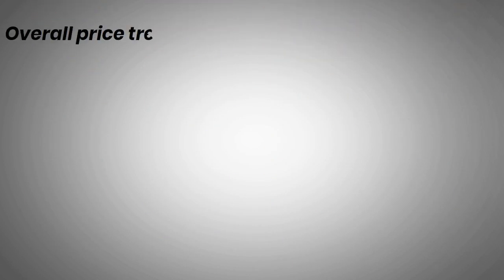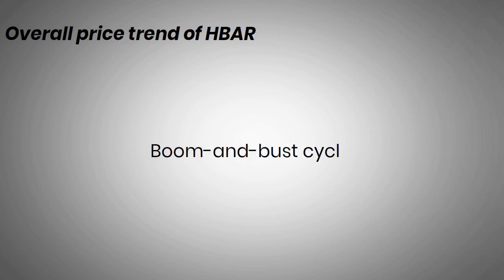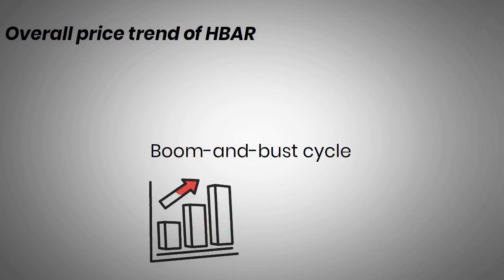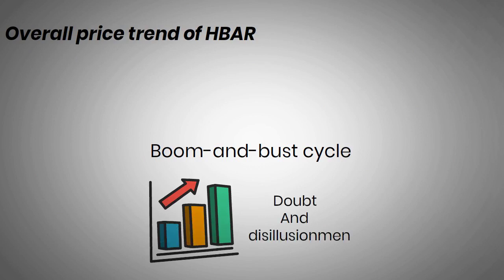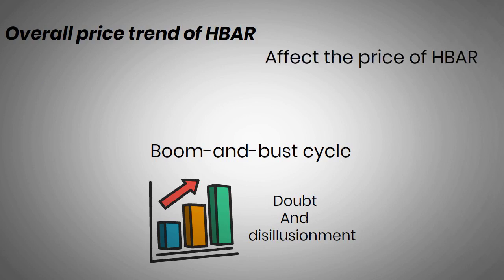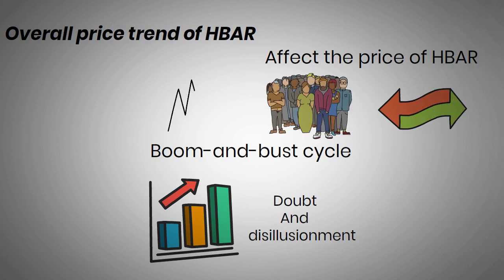HBAR's overall price trend tends to follow what's known as a boom-and-bust cycle — a pattern in which a period of growing excitement leads to a surge in price before doubt and disillusionment set in and result in a crash. Various things can affect the price of HBAR, including project news and developments, the flow of assets on exchanges, public sentiment, and emerging trends in the broader cryptocurrency and global economies.